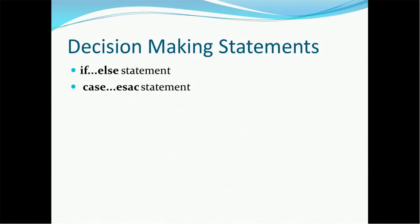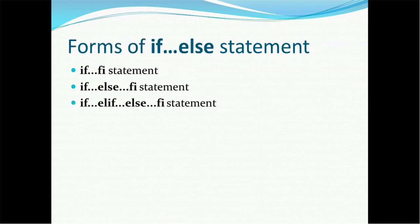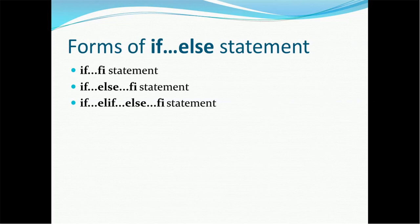Let's first cover the conceptual background on decision-making. The decision-making statements available in Unix are the if/else statement and the case/esac statement. There are basically three forms of if/else: one that starts with 'if' and ends with 'fi', one that is if/else ending with 'fi', and one that is if/elif/else ending with 'fi'.